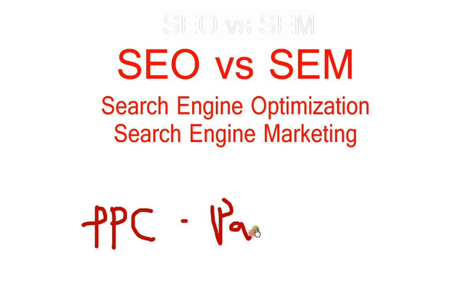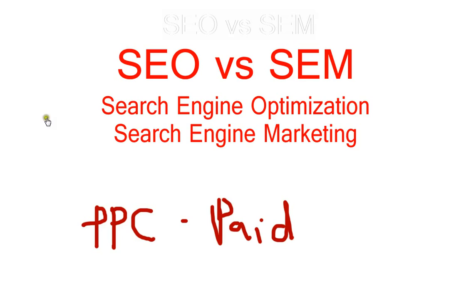SEM can also include things like pay-per-click and other paid options. This includes things like AdWords, where you pay to get advertisements at the top of a ranking. That's generally different from SEO, because SEO is just trying to optimize your own website to show up well within the rankings.